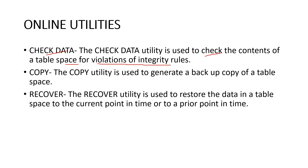Next we have the copy utility. The copy online utility creates a copy of a certain object — it generates a backup copy of a table space. This copy is also called the image copy utility. Next we have the recover utility. The recover utility recovers data to a current state or to a previous point in time. It can also recover data to a prior point in time by backing out committed work. Apart from that, we also have recover index, rebuild index, copy to copy, check index, and check log.